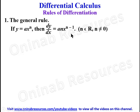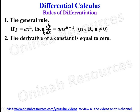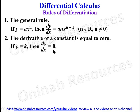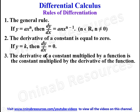Now we go to the second rule: the derivative of a constant is equal to zero. So if y equals k, where k is a constant, then dy/dx is equal to zero. Then the third rule: the derivative of a constant multiplied by a function is the constant multiplied by the derivative of the function.